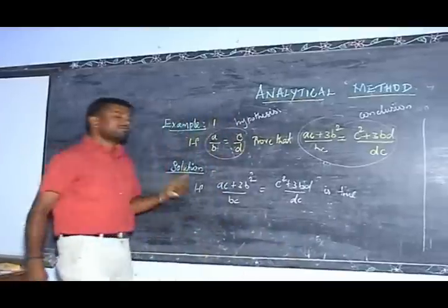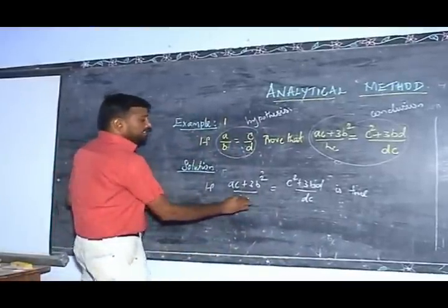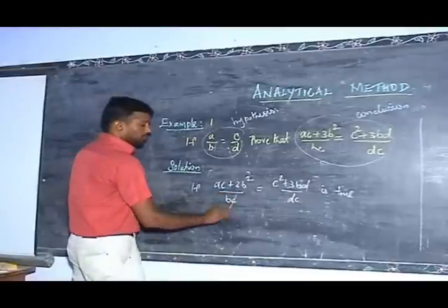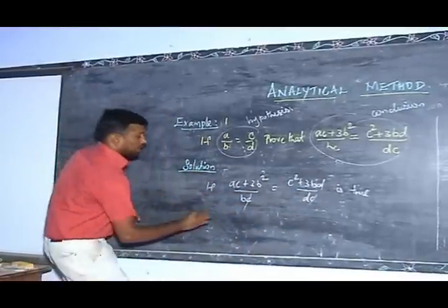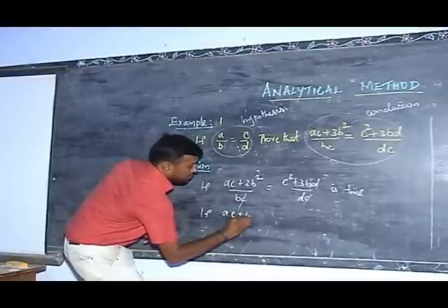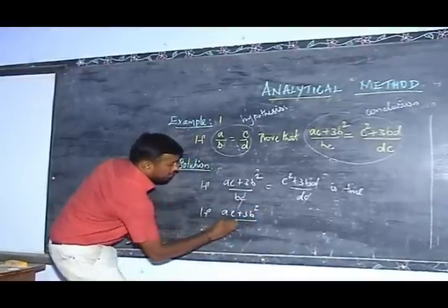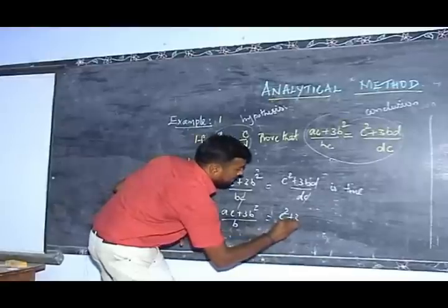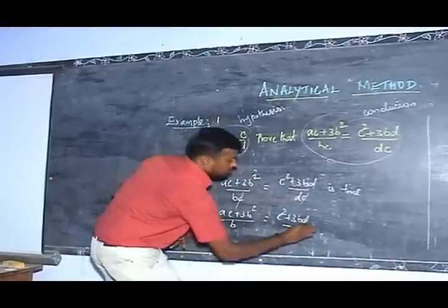I take this as an if-condition, therefore Step 2. Here C appears on both sides as a common factor, so I divide both sides by C. Therefore, if AC plus 3B squared divided by B is equal to C squared plus 3BD divided by D, this is Step 2.